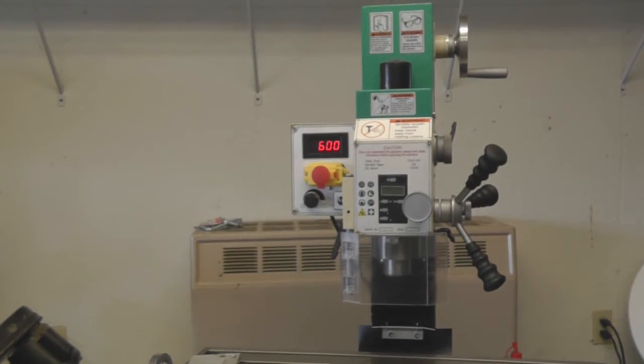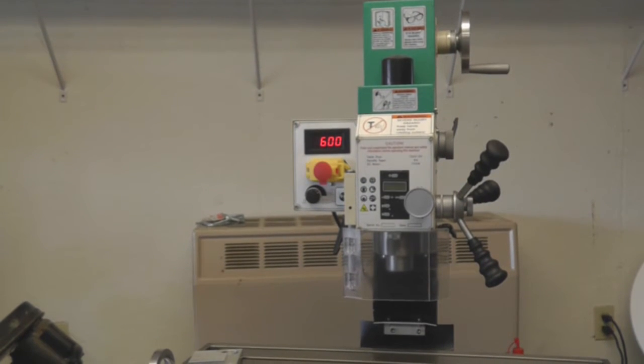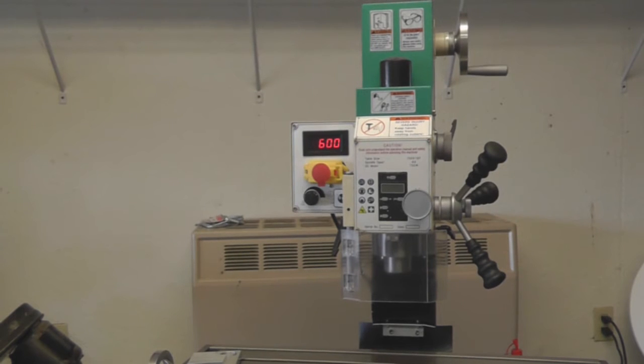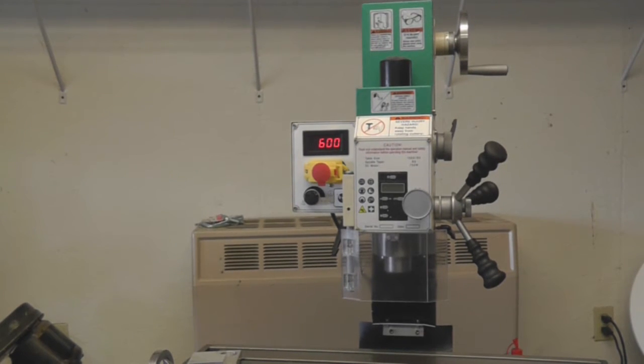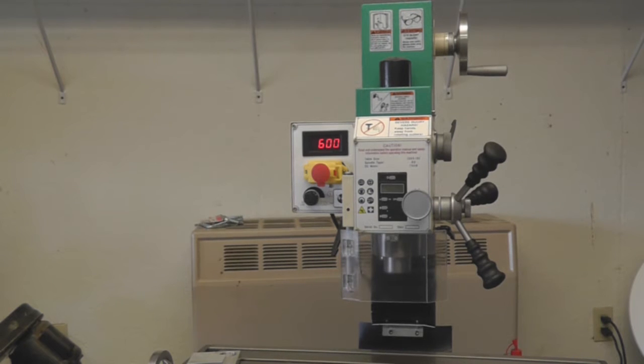You proceed to let that run for 10 minutes, and when it's done with that first run, then we're going to increase the RPM to a thousand. I can already hear in just a few minutes that it's been running that the mill is running smoother than it was initially.